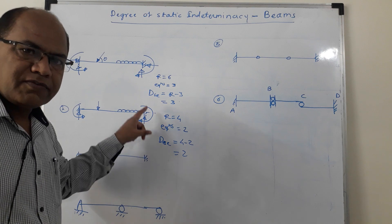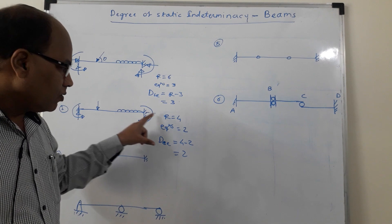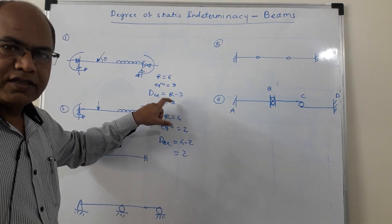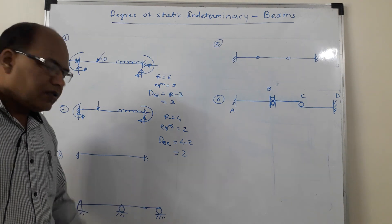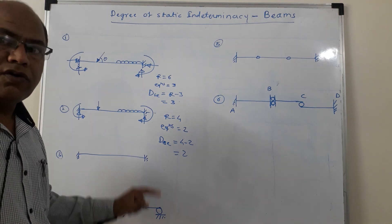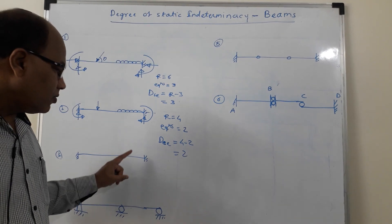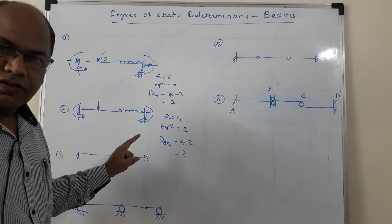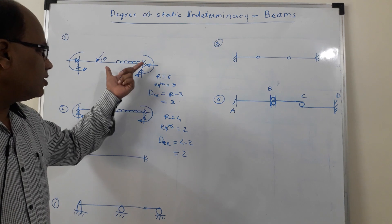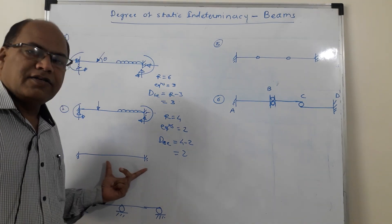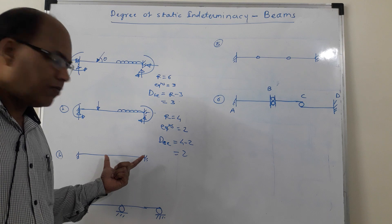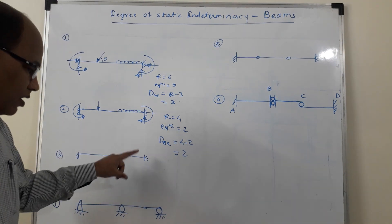So this fixed beam with vertical loading is statically indeterminate to degree 2. Now in the third case I have shown the fixed beam only with no loading shown. If the load is not shown on the beam, you will have to consider the general case of loading. Since it is the general case of loading, this problem is similar to the first case and the degree of static indeterminacy is equal to 3.